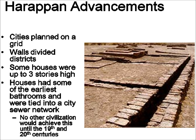Harappa had many unique advancements. One of these was a city planned on a grid — the cities were done with horizontal and vertical streets that crossed each other, forming square or rectangular blocks, kind of like we have today. Walls divided the districts of the city, not trapping anyone, just as a border between different sections. Some of the houses in Harappa were up to three stories tall, an extreme achievement for this early in history. But probably the biggest achievement was a sewer system. Each house would have a bathroom where you could do your business, throw down a bucket of water behind it, and it would wash through channels and out of town. No other civilization would achieve indoor bathrooms for the majority of its population until the late 1800s to early 1900s.